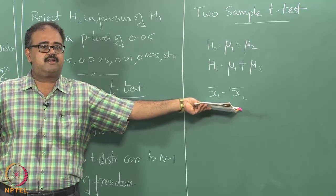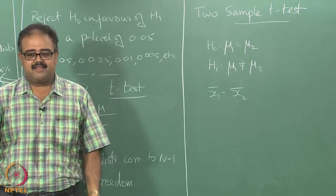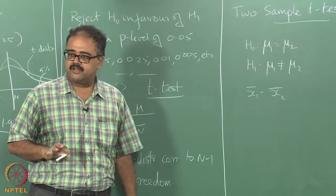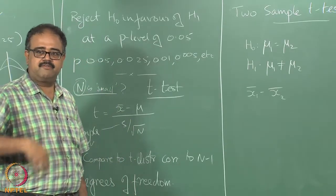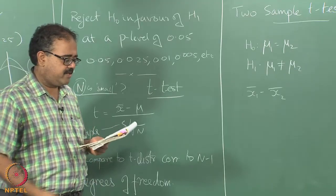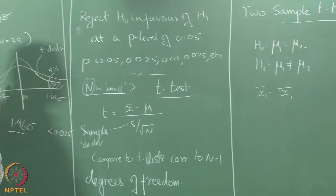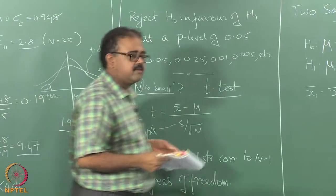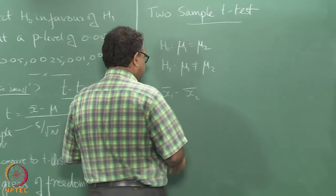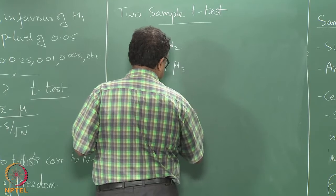What I want to look at is x1_bar minus x2_bar, which should be 0 if the null hypothesis is true. I am going to compare it with a 0-mean t-distribution with some number of degrees of freedom, but I need to compute the t-statistic. The t-statistic looks something like this in this case.